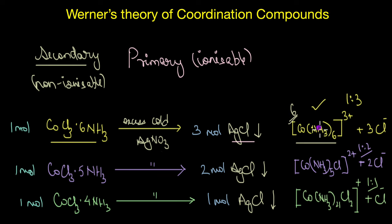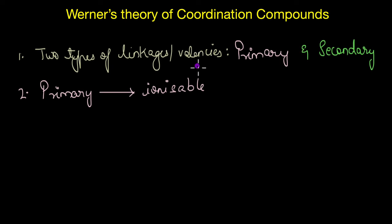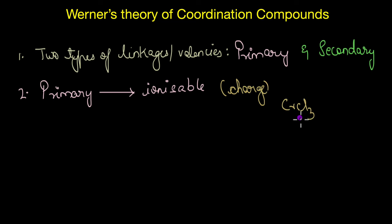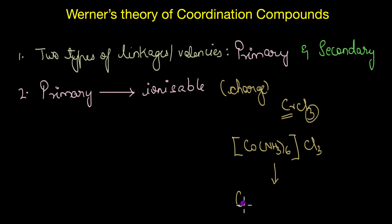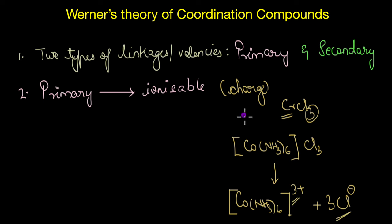We'll discuss ligands and their types in upcoming videos. Now, let's look at the main postulates of Werner's theory. The first postulate is that coordination compounds show two types of linkages or valencies: primary and secondary. Primary valencies are ionizable and essentially refer to the charge on the central metal. For example, CrCl3 has a primary valency of three, and the complex [Co(NH3)6]Cl3 exists as [Co(NH3)6]³⁺ and 3Cl⁻, where the oxidation state or primary valency of the central metal is three.